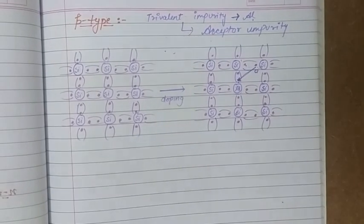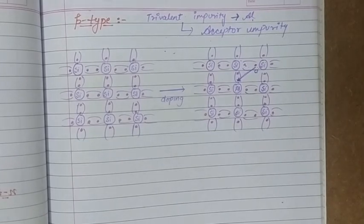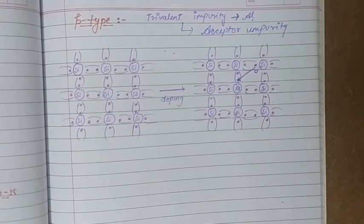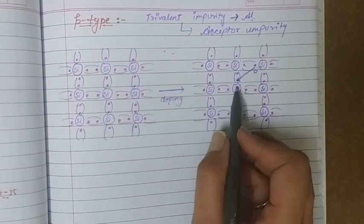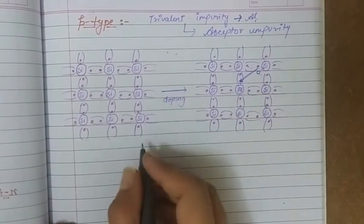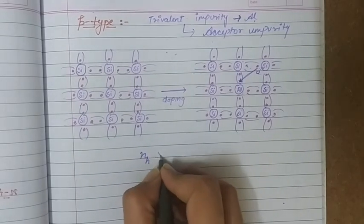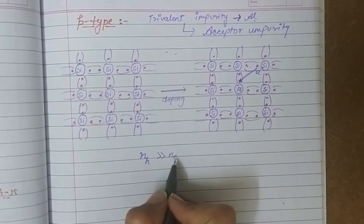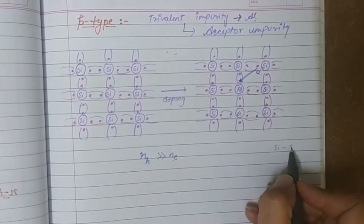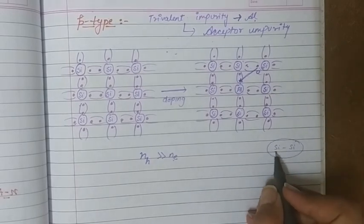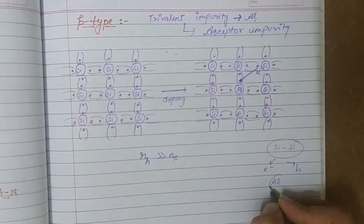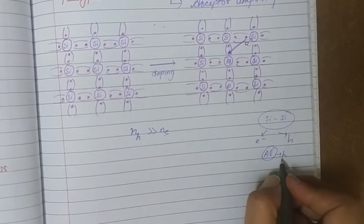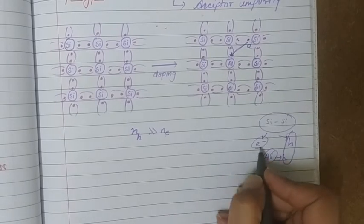Just as in n-type semiconductor the impurity atom created free electrons — making the number density of free electrons greater than holes — in p-type semiconductor the impurity atom creates holes. Electrons in p-type are only generated from the breaking of silicon-silicon bonds due to thermal energy, while holes come from both that thermal process and from the acceptor impurity atom aluminium.